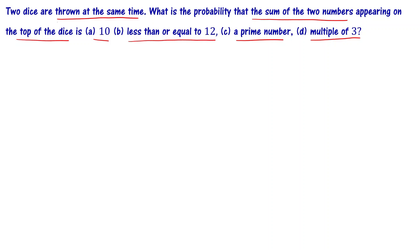Two dice are thrown at the same time. Let's say one black color dice and one red color dice. The black color dice can show 1, 2, 3, 4, 5, or 6, and the red color dice can also show 1, 2, 3, 4, 5, or 6.